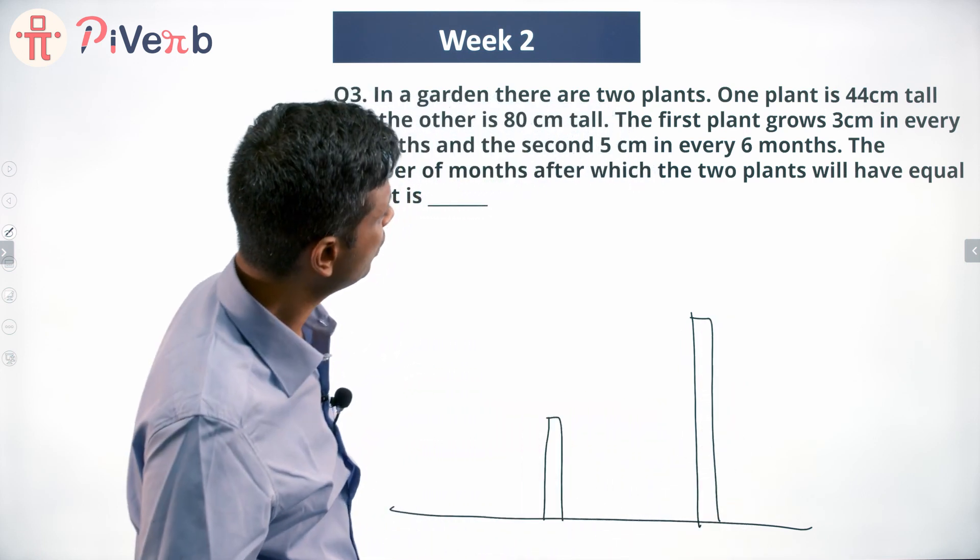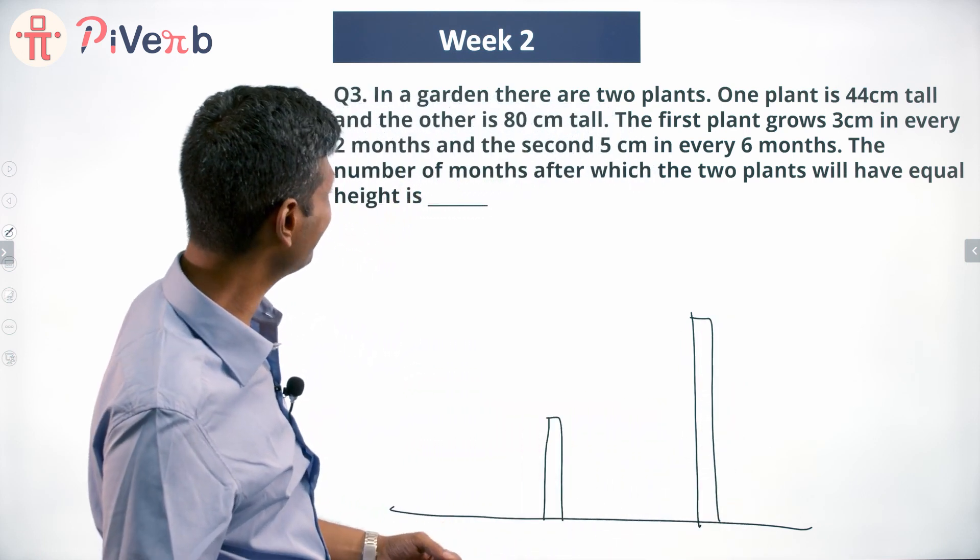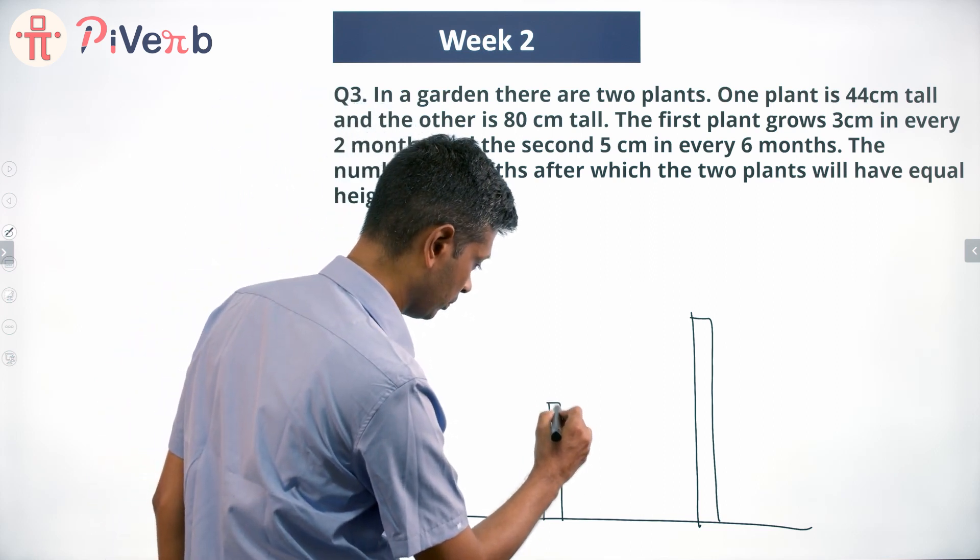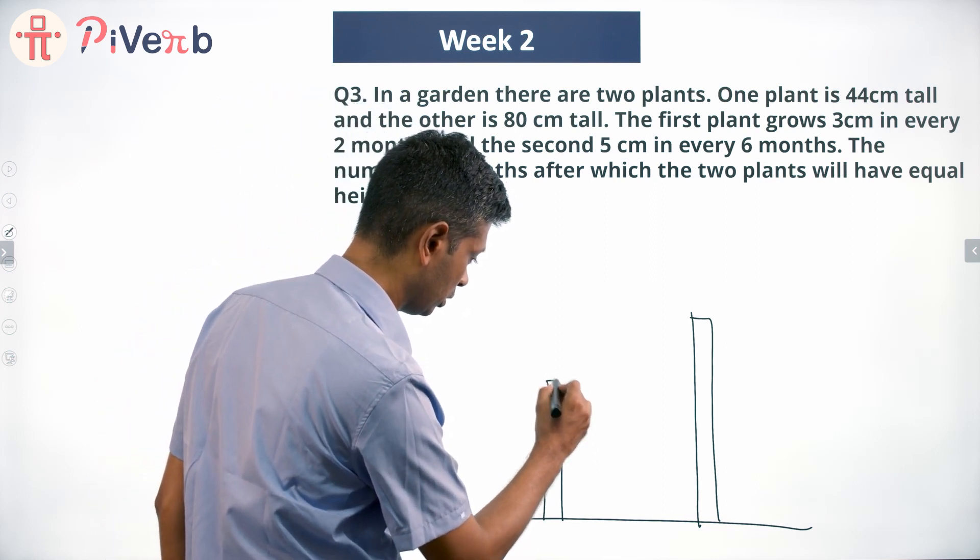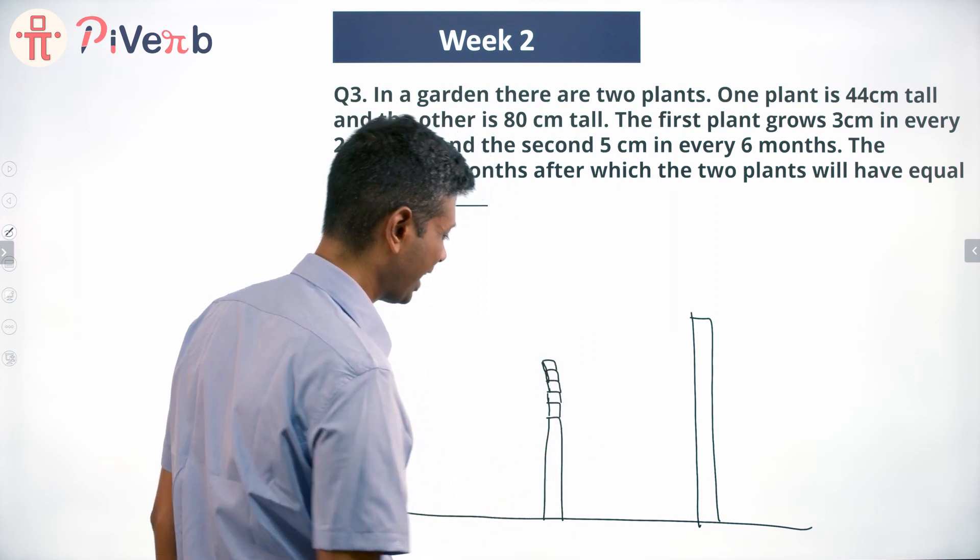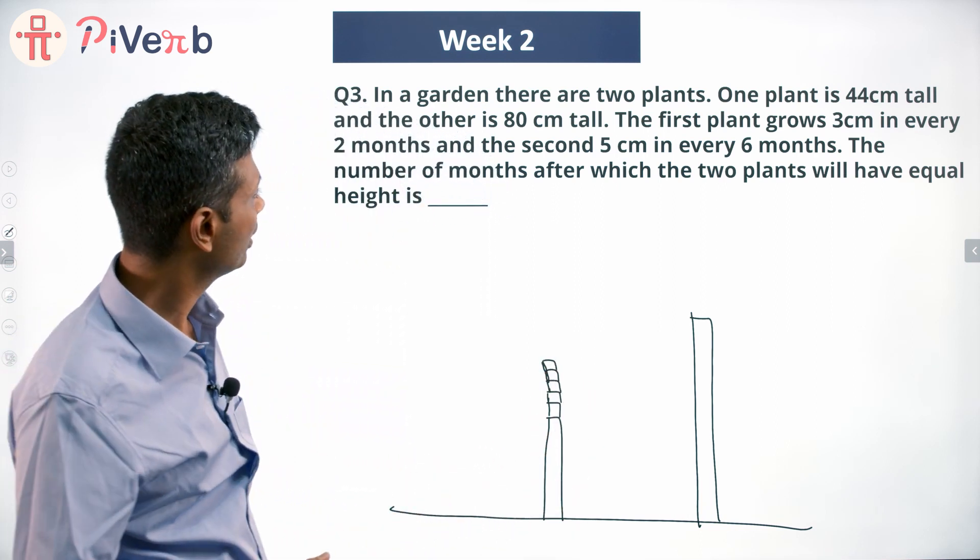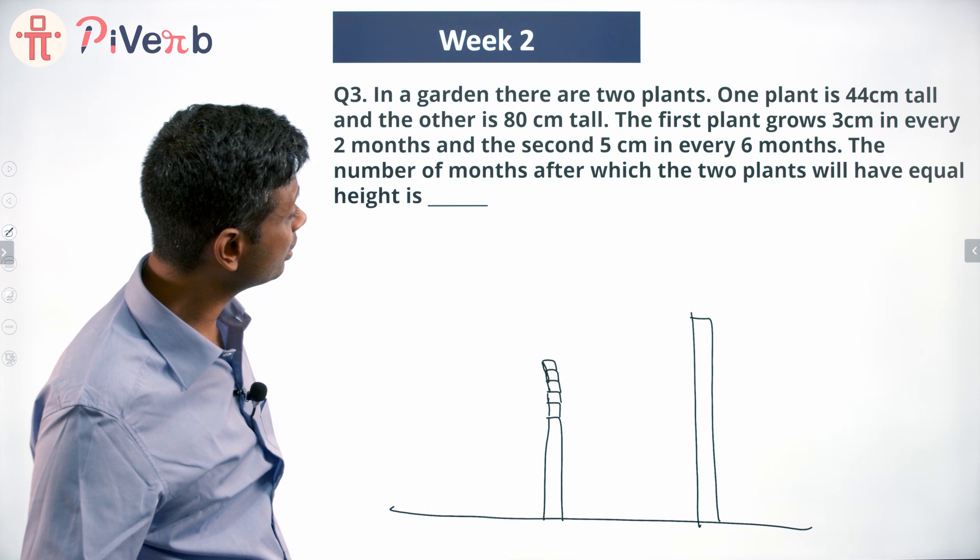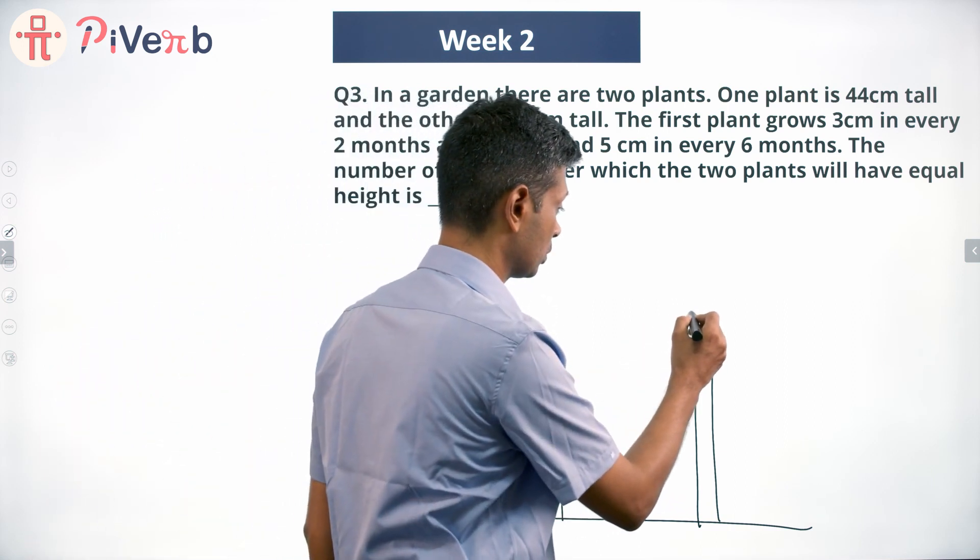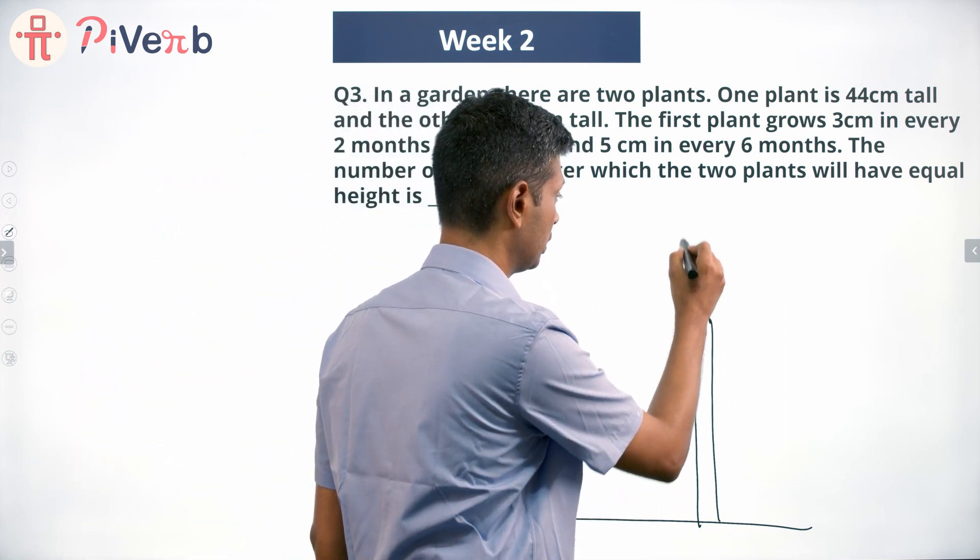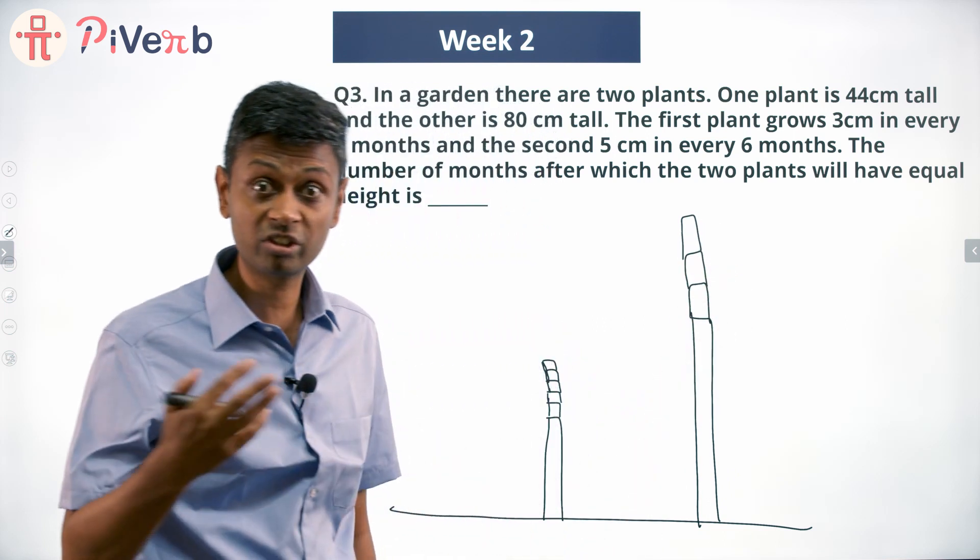The first plant grows 3 centimeters every 2 months, so 3, 3, 3, 3 every two months it grows 3 centimeters. The second one grows 5 centimeters every 6 months - 5, 5, 5, but every 6 months.